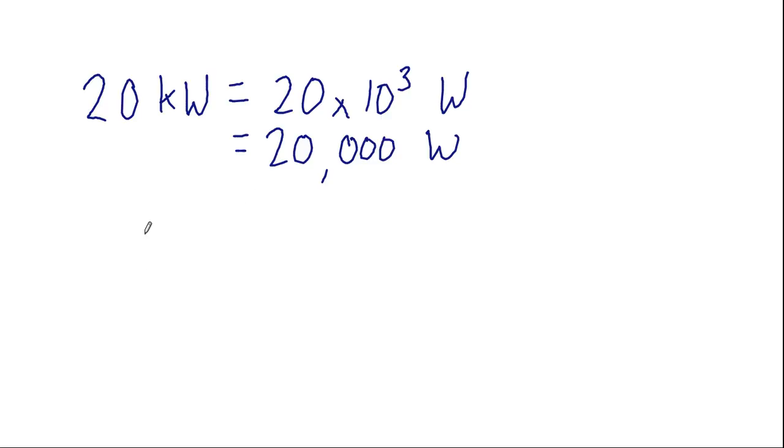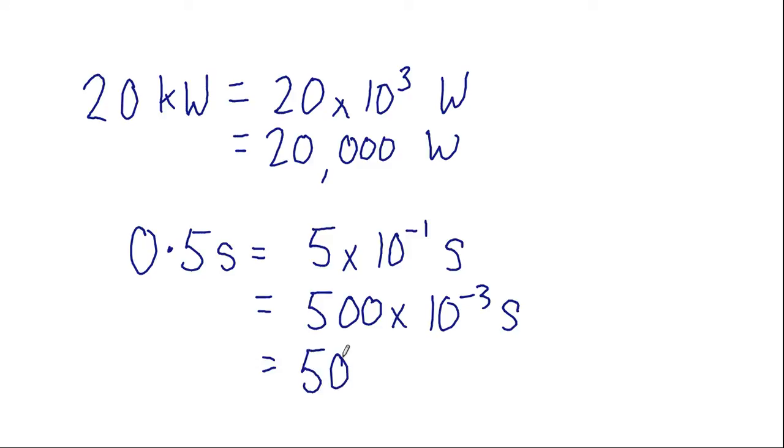Another example, if we have half a second, then what is that in milliseconds? Well, half a second is 5 by 10 to the minus 1 seconds, which is the same as 500 by 10 to the power of minus 3 seconds. Because 500 is 5 by 10 to the power of 2 times by 10 to the power of minus 3 is 10 to the power of minus 1. Which is 500 milliseconds. Because milli, lowercase m, has a factor of 10 to the power of minus 3.